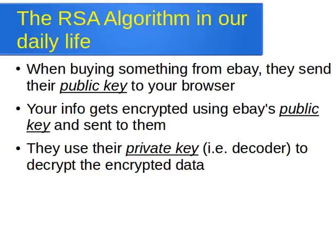For example, if you buy a book from eBay or Amazon or several online places, what happens is when you buy something from eBay, they send their public key to your browser. When you fill in your information, your browser encrypts it using that public key and sends it back to eBay. At eBay's end, they use their private key — their decoder — to decrypt the data and retrieve the original information, for example your bank details, your card number, and things like that.